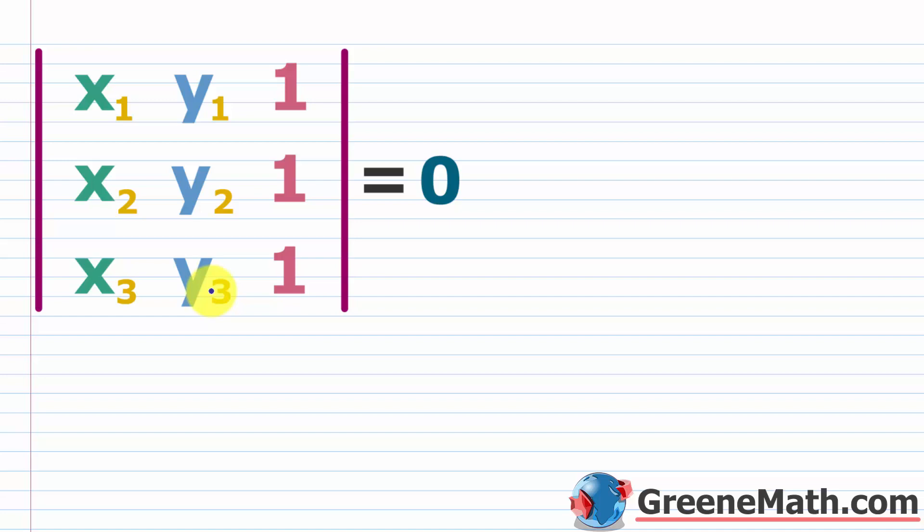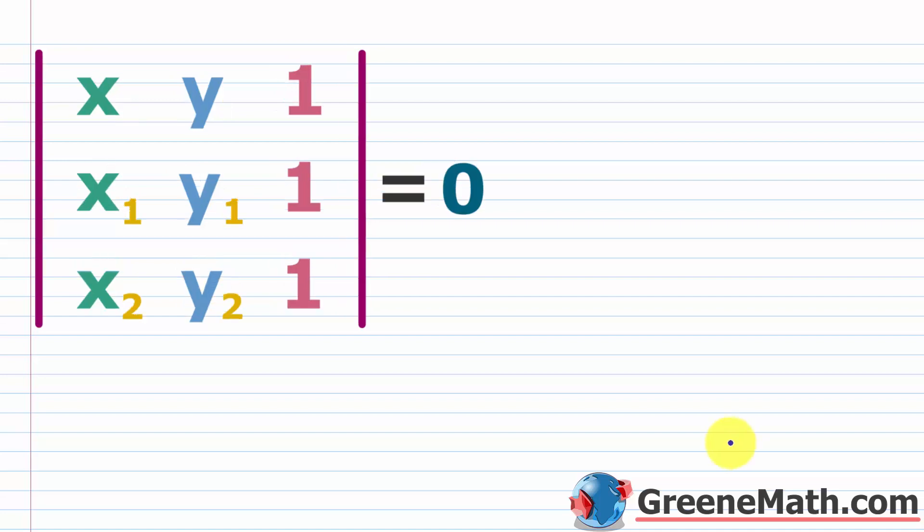Now we can expand on this even further and use this formula to find the equation of a line. We already talked about how to do this earlier in the course using the typical algebra one method: if you're given two points on the same line, you first calculate the slope using the slope formula, then plug into point-slope form — y minus y₁ equals m times the quantity x minus x₁. From there you can solve for y in slope-intercept form or put it in standard form.